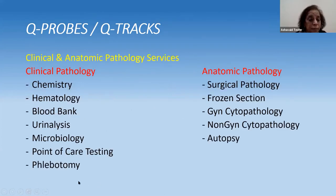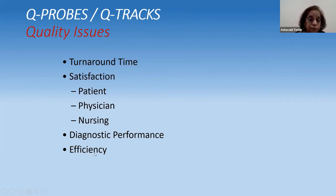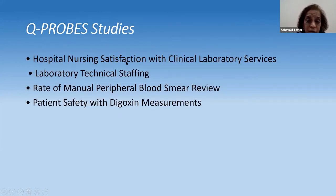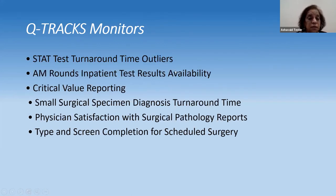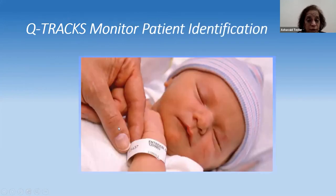Q Probes and Q Tracks have been undertaken across various laboratory sections — all available on the CAP website. They cover the entire test cycle, including turnaround time, patient satisfaction, diagnostic performance, efficiency, and safety. CAP lays a lot of stress on safety — both patient safety and personnel safety. Other areas covered include information systems errors, competence assessment, nursing satisfaction, technical staffing, peripheral blood smear quality, and accuracy of ordering, testing, and reporting.